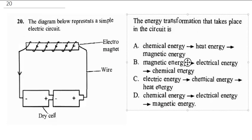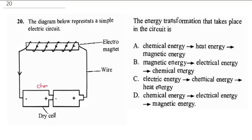Question 20 says: the diagram below represents a simple electric circuit. The energy transformation that takes place in this circuit is — first, the battery generates chemical energy. This chemical energy generates electricity that moves through the wire, which is electrical energy. The electrical energy then moves to a magnetic bar — electromagnets — creating magnetic energy and a force field around the magnet. So the transformation is chemical to electrical to magnetic. The correct answer is D.